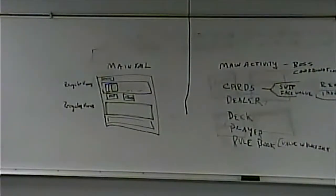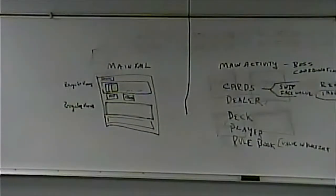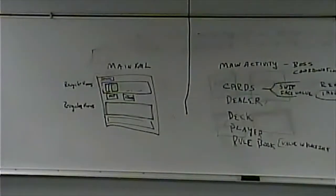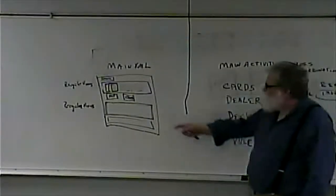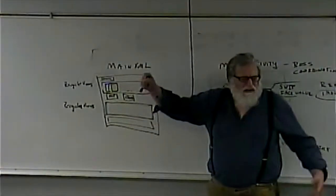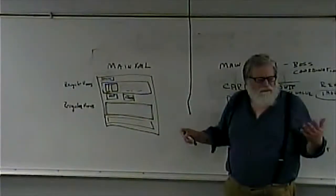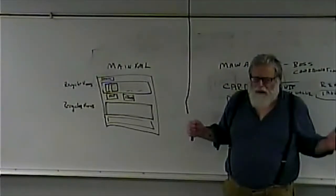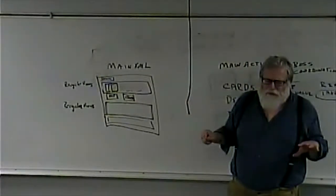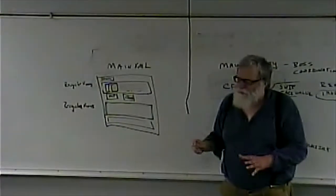I'm going to go online and look for 52 card images to download and give to you, so you don't have to create them. If you're intimidated, for now don't worry about images — make them just text labels that say 'K hearts' or 'A clubs.' You don't have to do everything all at once. And right now you're just designing, not even programming.